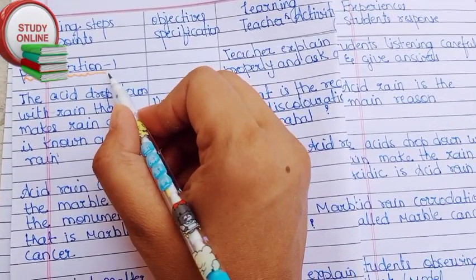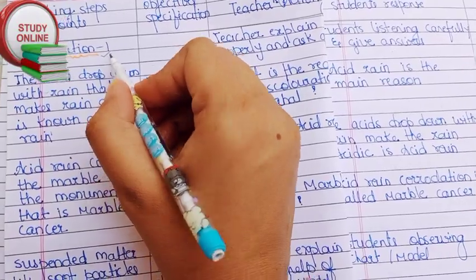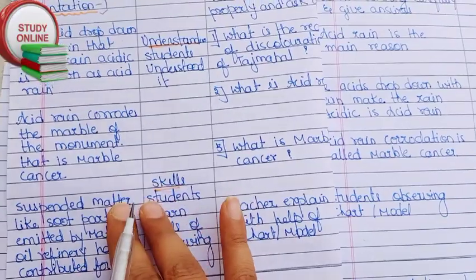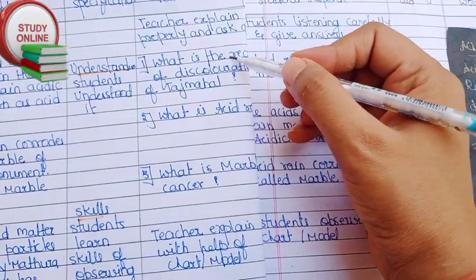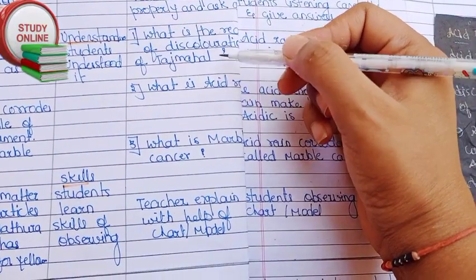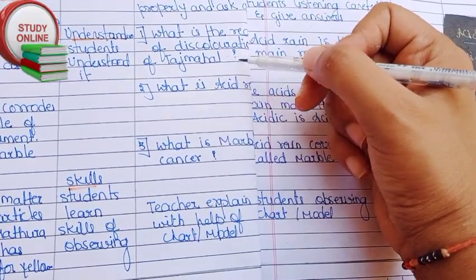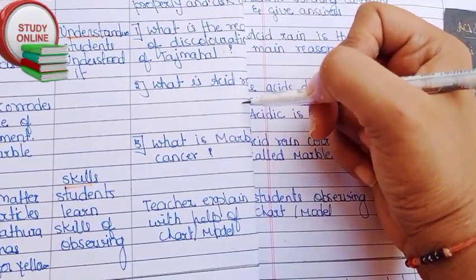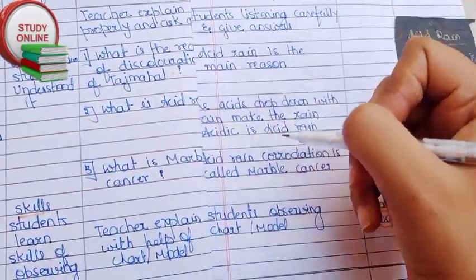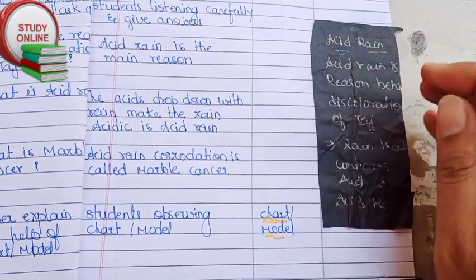In Presentation 1, we have to explain everything properly for five to six minutes. Here you can see all the things we have to teach students, and we also have to mention them here. After explaining properly, we also have to ask questions related to that. I have added three questions: what is the reason for the discoloration of Taj Mahal, what is acid rain, and what is marble cancer. Here are the expected answers from students, and here is the blackboard work.